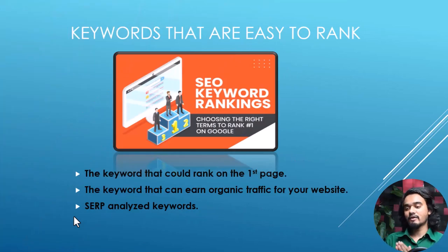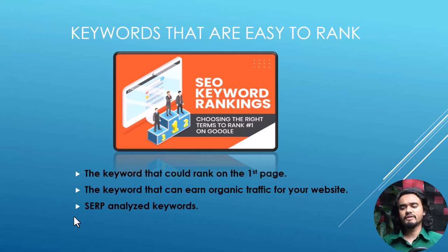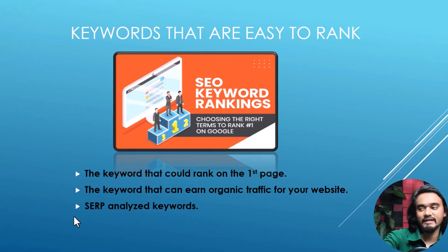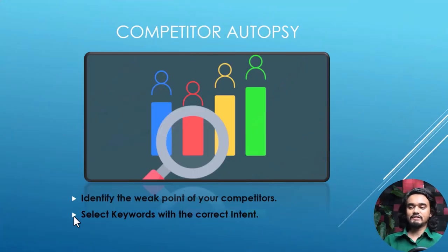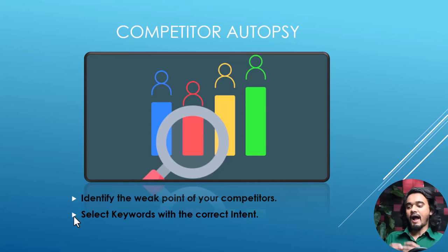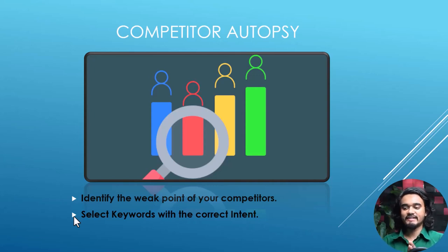Number five is keywords that are easy to rank — keywords that could rank on the first page and earn organic traffic for your website. Number six is competitor autopsy, which means identifying the weak points of your competitors and selecting keywords with the correct intent.